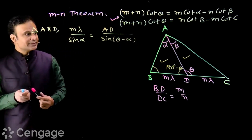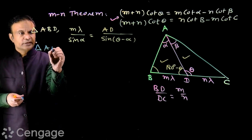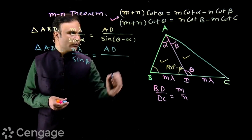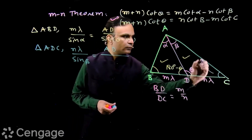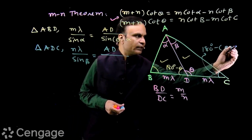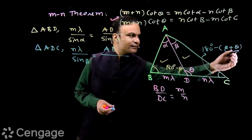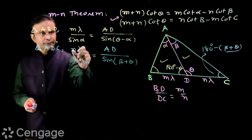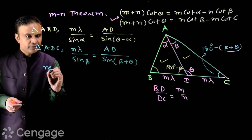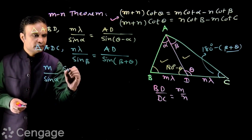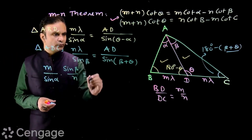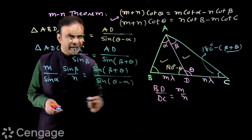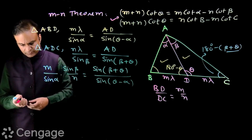Now we apply the sine rule in triangle ADC. We have n lambda upon sine beta, which equals AD upon sine of (180 degrees minus (beta plus theta)), which simplifies to sine of (beta plus theta). Dividing the first result by the second, we get: (m / sine alpha) multiplied by (sine beta / n) equals sine(beta + theta) upon sine(theta minus alpha).